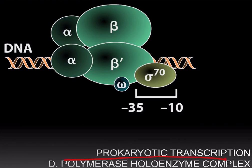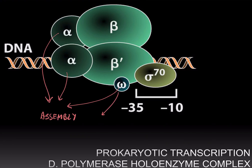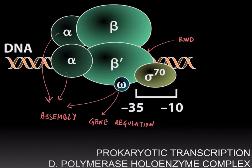The alpha dimer and omega are involved in the assembly of this complex. The omega subunit is also involved in the regulation of gene expression, which means it decides when a particular gene will be transcribed or not. The beta prime subunit is responsible for binding DNA.